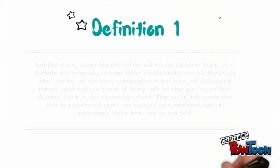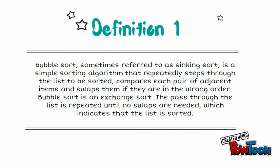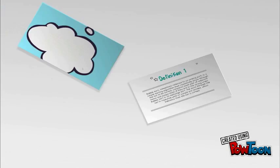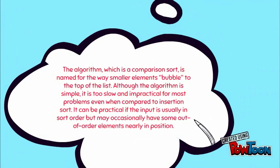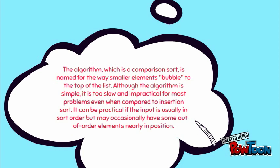Bubble sort, sometimes referred to as sinking sort, is a simple sorting algorithm that repeatedly steps through the list to be sorted, compares each pair of adjacent items and swaps them if they are in the wrong order. It is named for the way smaller elements bubble to the top of the list. Although the algorithm is simple, it is too slow and impractical for most problems, even when compared to insertion sort.